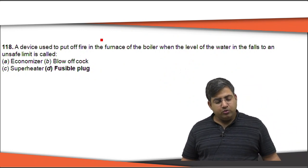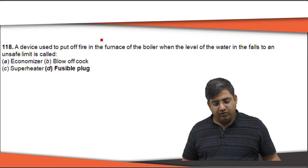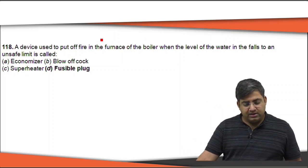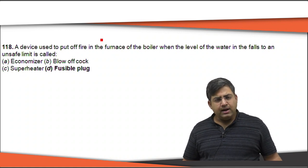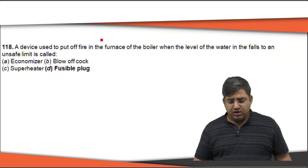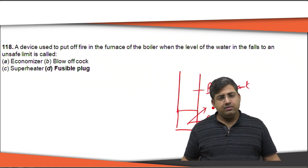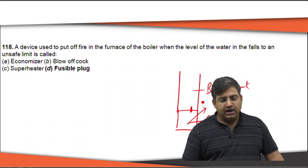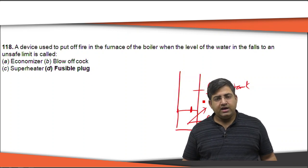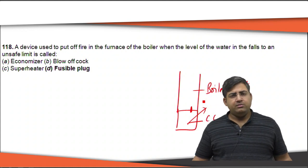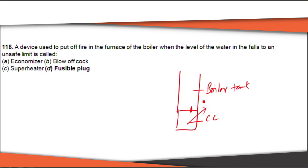The next question: a device used to put off fire in the furnace of a boiler when the water level falls to an unsafe limit. Whenever the furnace temperature increases excessively, you can use a fusible plug. The fusible plug has a very low melting point. When temperature inside the combustion chamber exceeds the safe limit, the fusible plug melts and water flows into the combustion chamber, extinguishing the fire. The right answer is D.